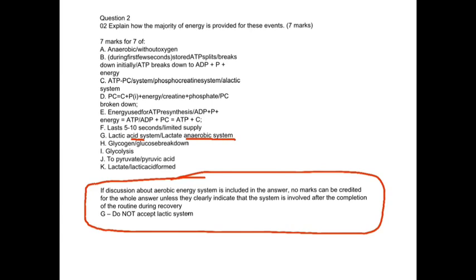For these seven marks: you can state anaerobic or without oxygen. During the first few seconds, stored ATP splits down — ATP breaks down to ADP plus phosphate plus energy. The ATP-PC system, or phosphocreatine system, breaks down to creatine plus phosphate plus energy; the creatine and phosphate are broken down and the energy is reused for ATP resynthesis, so ADP plus P plus energy equals ATP. It lasts for 5–10 seconds with a limited supply. The lactate anaerobic system then takes over with a partial breakdown of glucose via glycolysis to pyruvate or pyruvic acid, where lactate or lactic acid is formed.